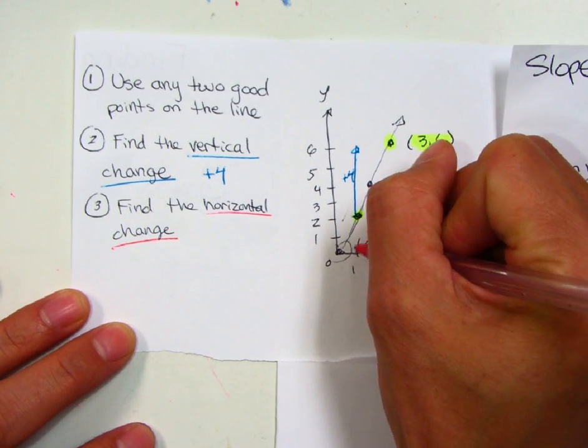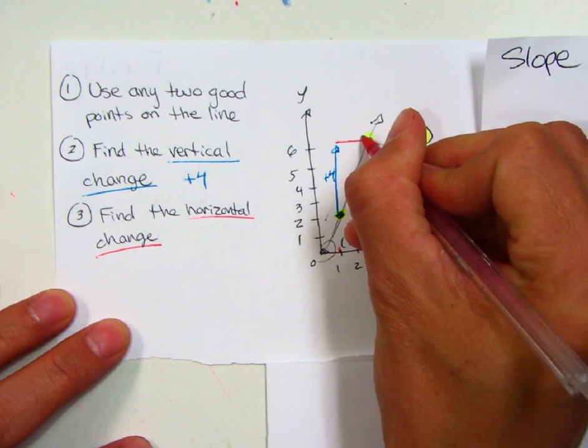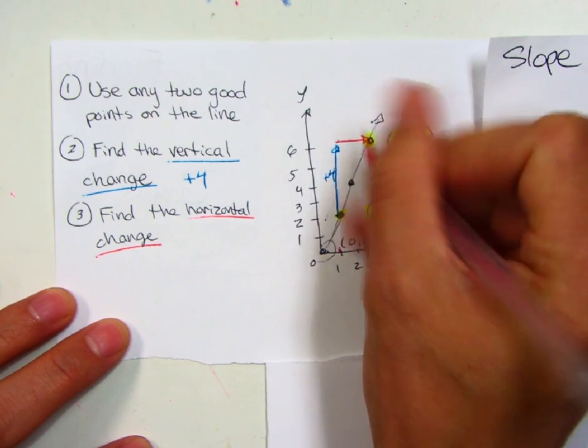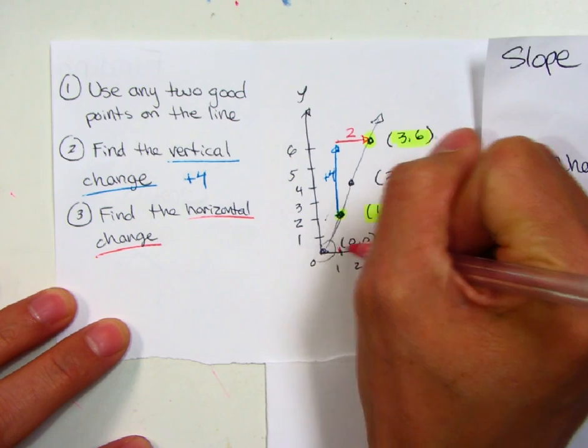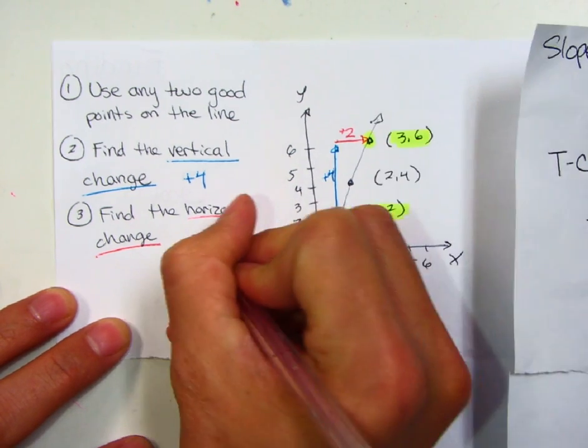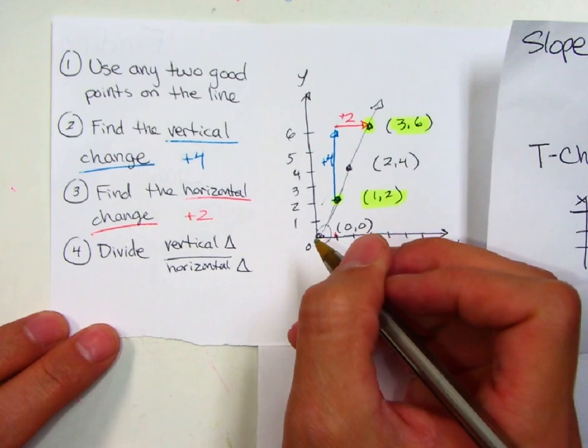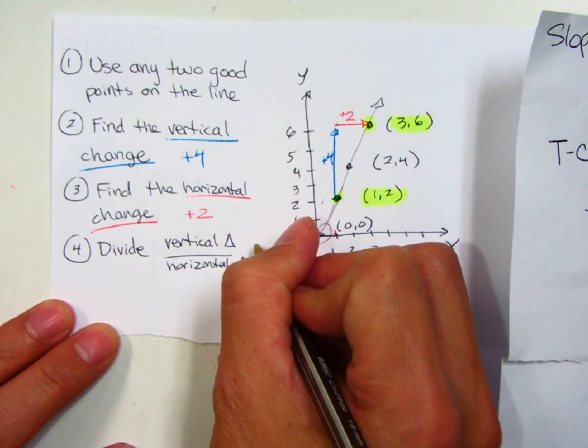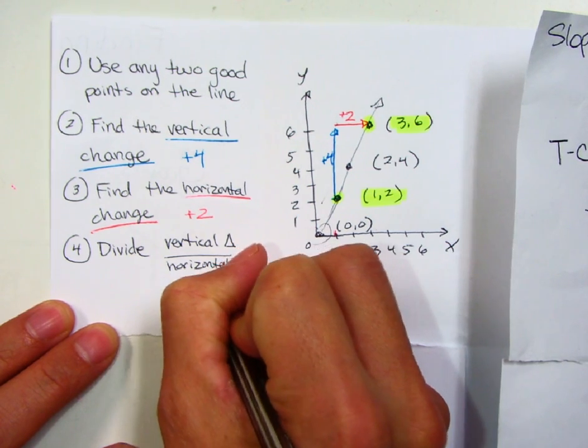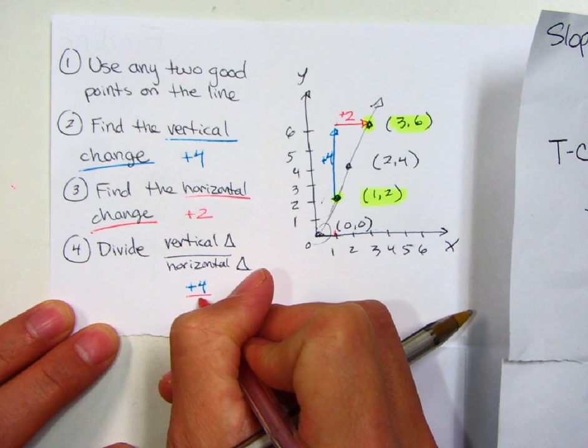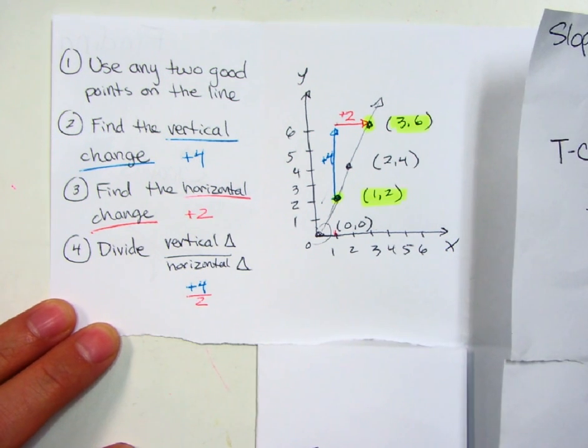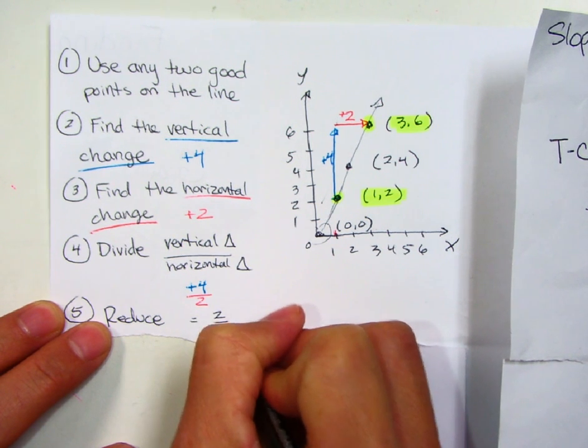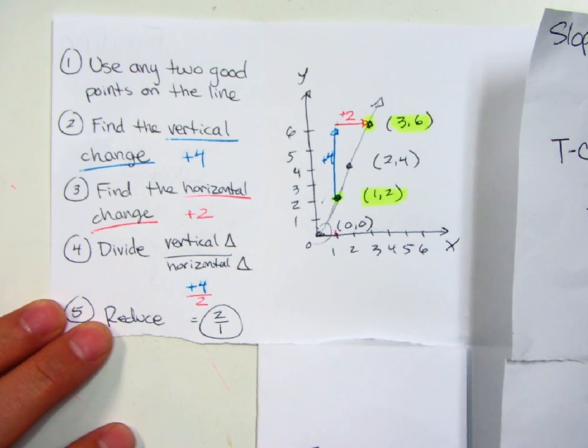Next, I want to find the horizontal change. So from one, it went to three. So from one to three, kind of make like a triangle here, right triangle. It went up four and it went over two. From one to three is two spots, one, two. So positive two right there. So here I'm going to divide now. The vertical change in this example happened to be positive four. And I want to divide that with the horizontal change, which was two. So four over two. The last thing I'll do is I'm going to divide, reduce by dividing both by two. I get two over one and that's my slope. That's how I find slope given a graph.